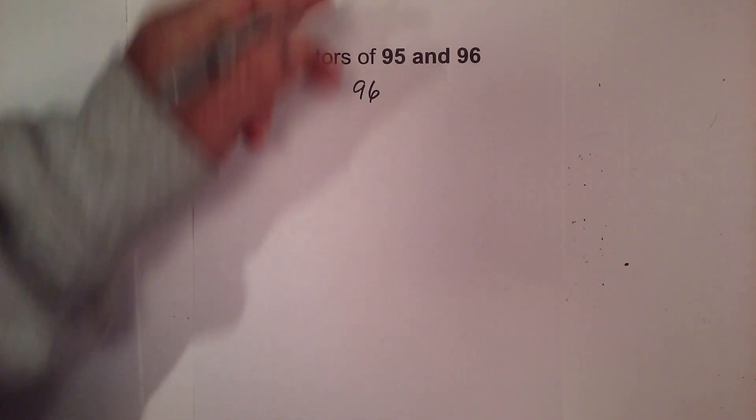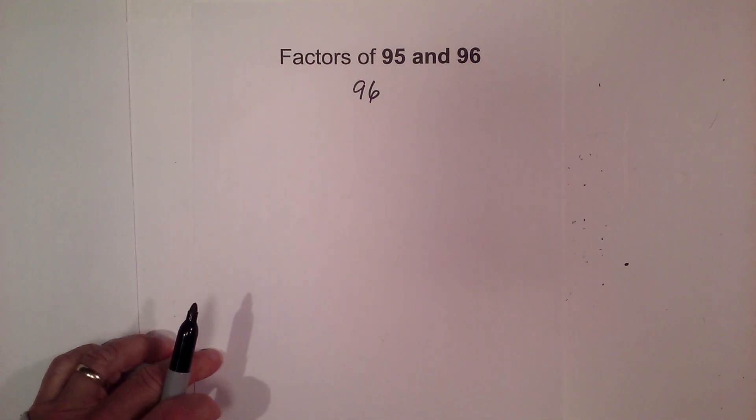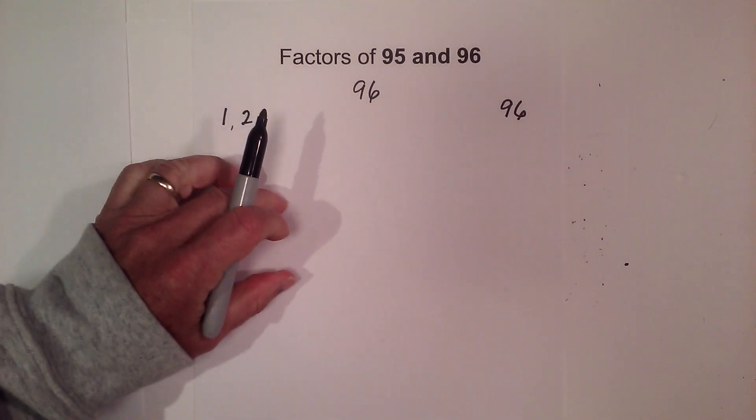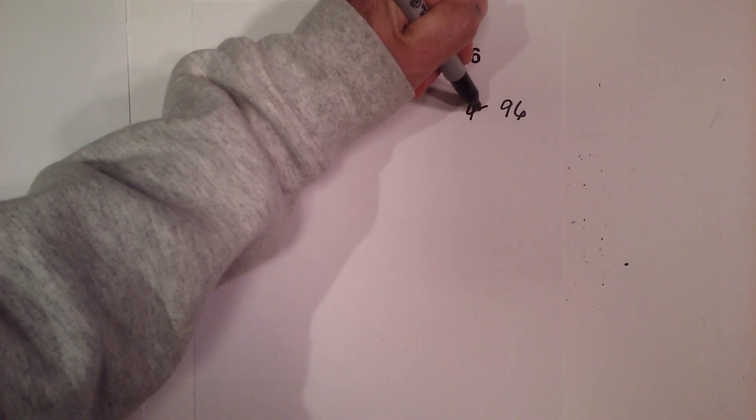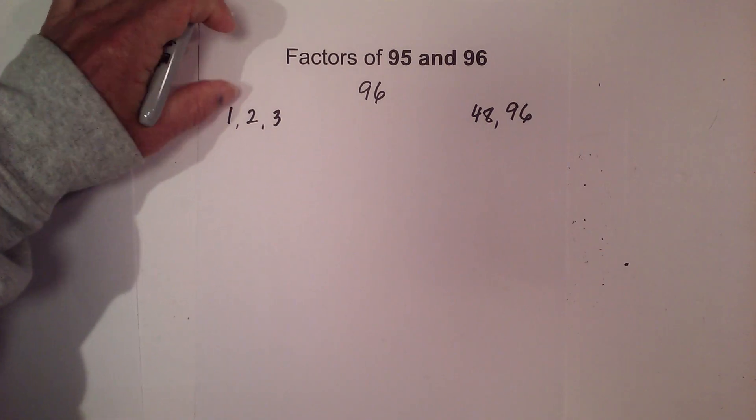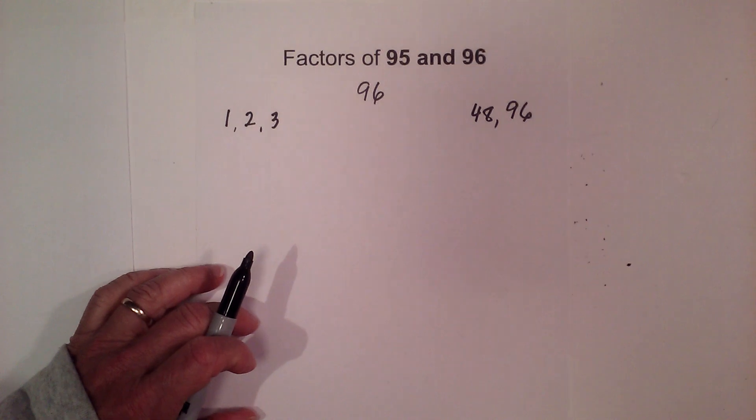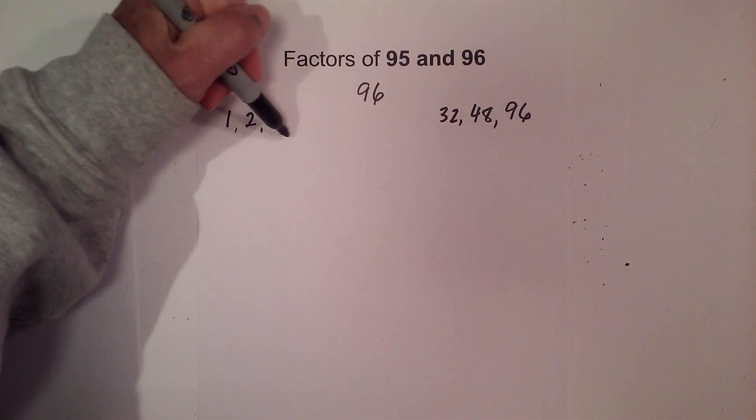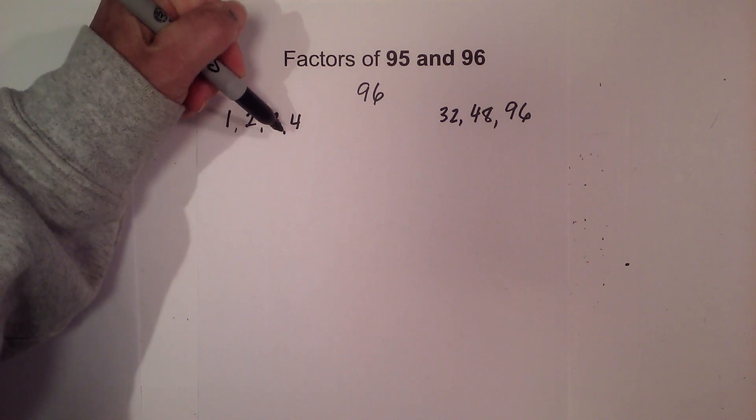Let's begin with 1 times 96. And then 2 goes into it 48 times. And then you can multiply 3 times 32, and then 4 times 24.